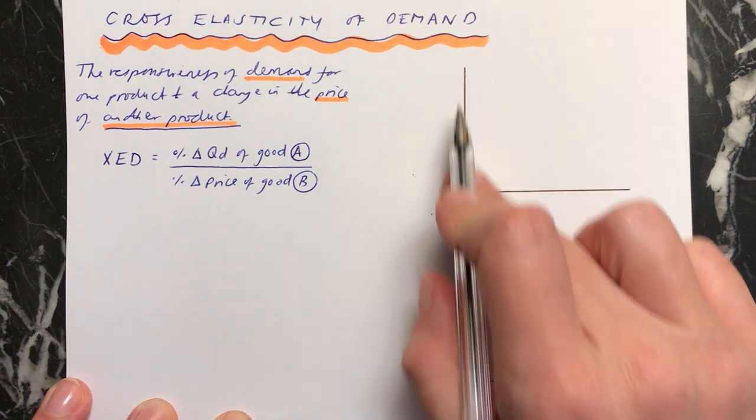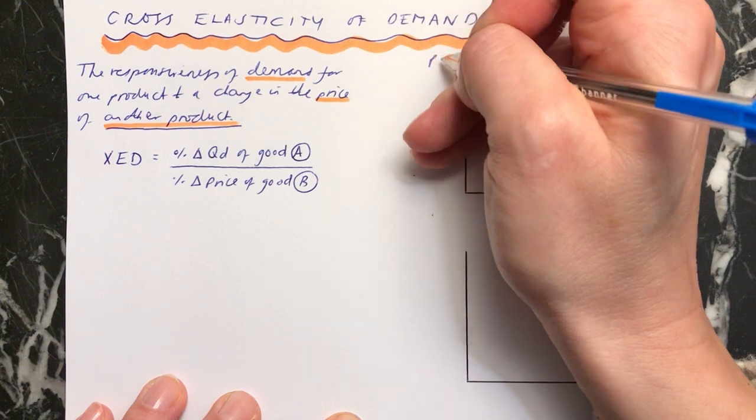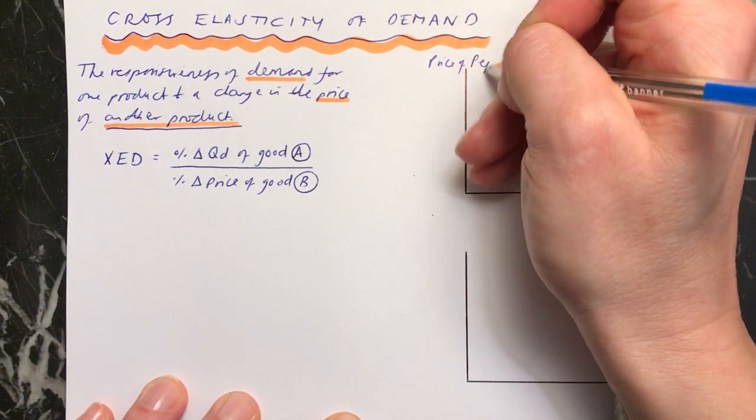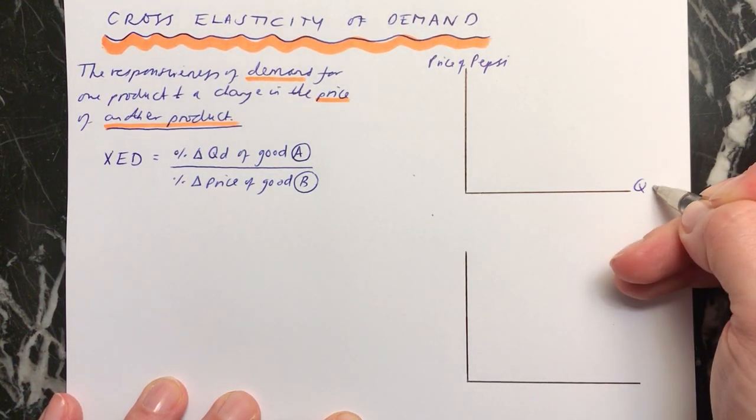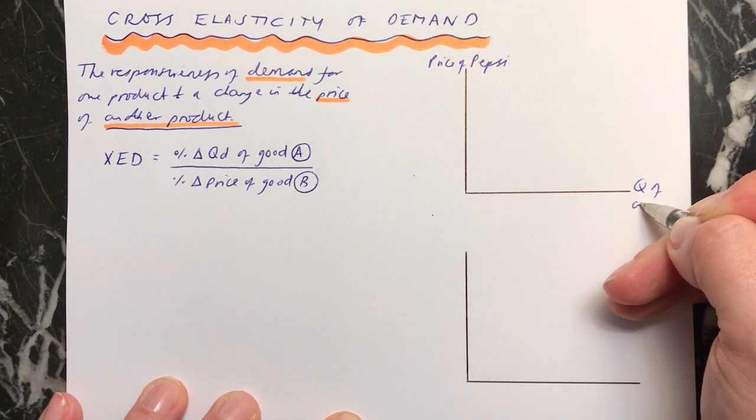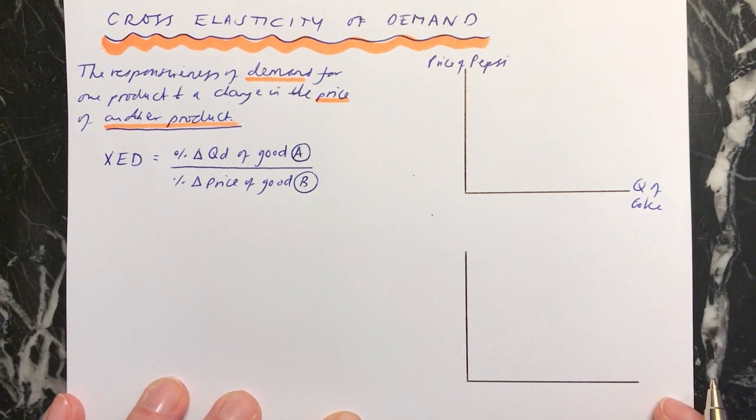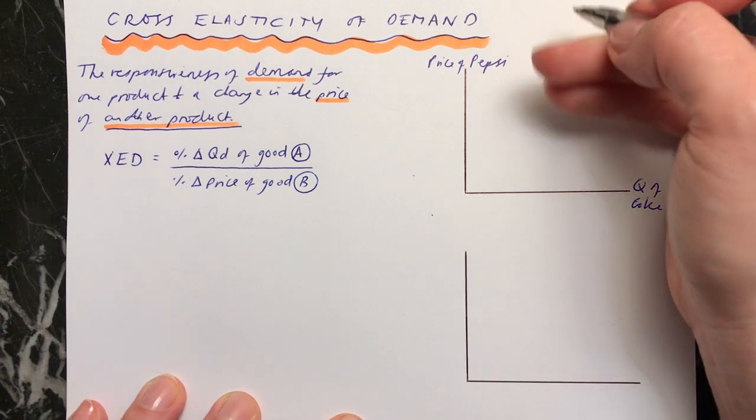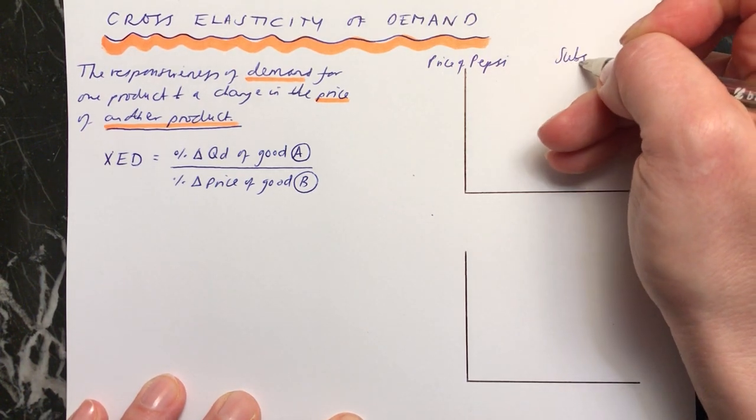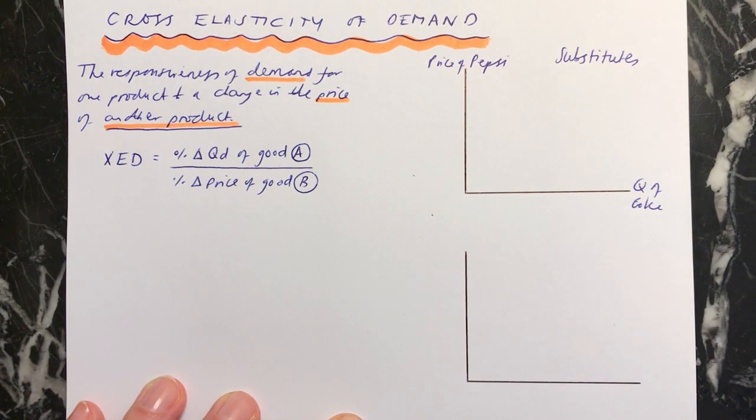You could illustrate this on a graph. Let's take something like the price of Pepsi and see how that affects the quantity demanded of Coke. If you're looking at Coke and Pepsi, they are interchangeable. Some people think they could either have Pepsi or Coke. For these two, we say that these are substitutes for each other. You can have one or you can have the other.